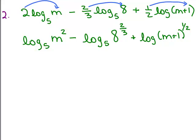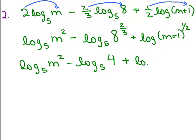Now what can we do with this log₅(8^(2/3))? 8^(2/3) you could actually simplify that because that means the cube root of 8 squared. Remember the root's at the bottom, so you take the cube root of 8 which is 2 and then square it. So this is really the same as log₅(m²) - log₅(4) + log₅(√(m+1)). Notice I did not write log₅ here initially, so I need to add base 5 because that was just a mistake on my part.